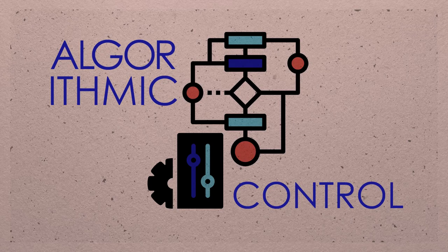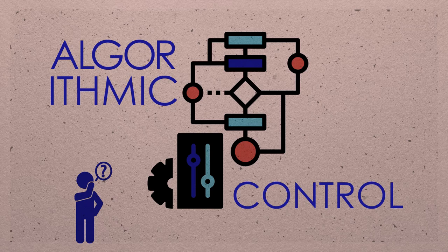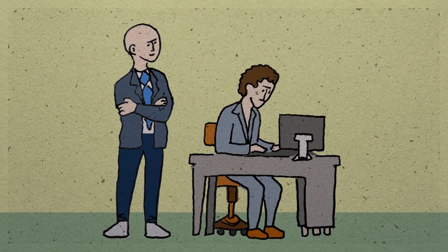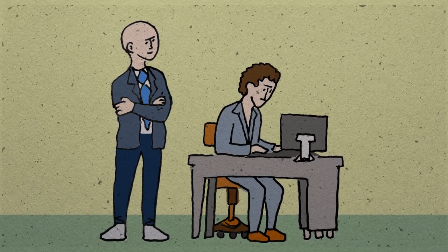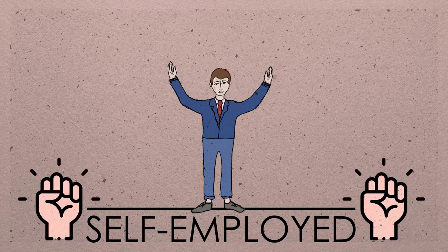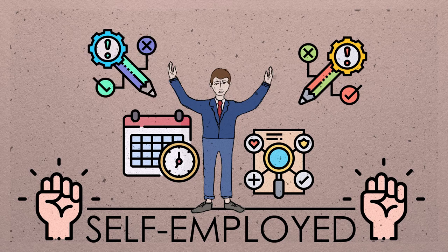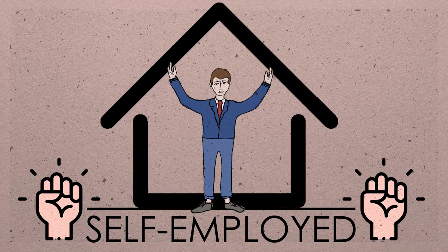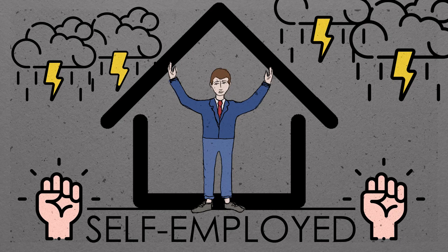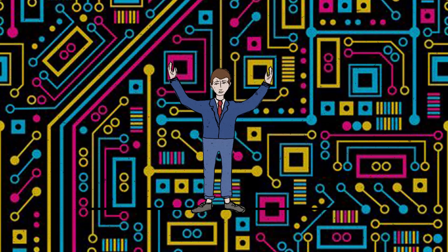Yes, algorithmic control becomes problematic when it happens outside the traditional employment relationship. Self-employed workers need autonomy in order to determine how, when and under which conditions they work. Freedom to decide independently helps them to mitigate risks that their work entails, but algorithmic control diminishes this freedom.